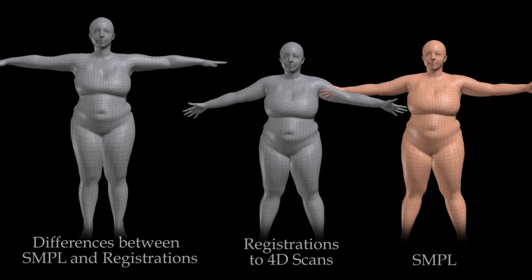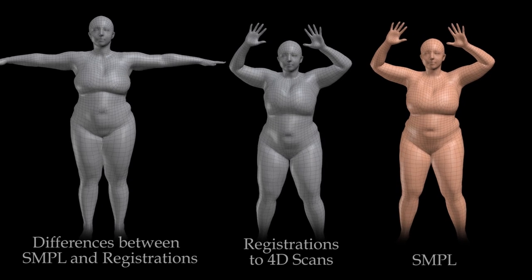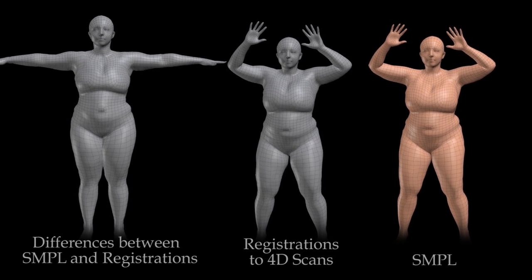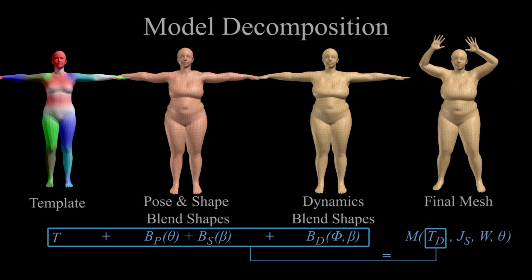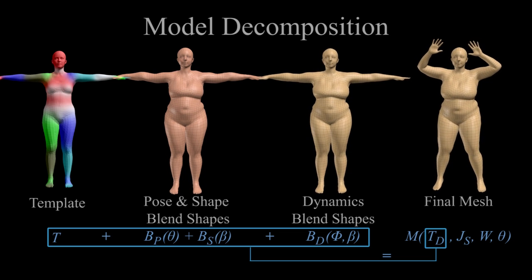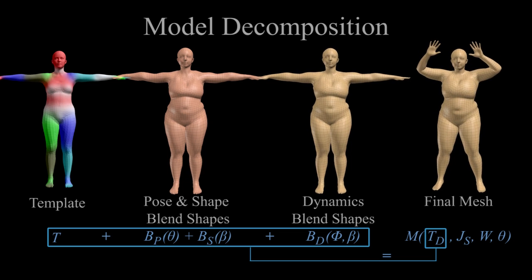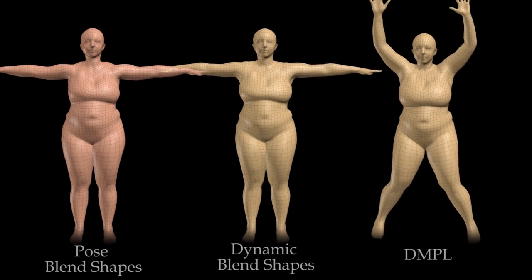While realistic, SMPL does not model soft tissue dynamics. The center mesh shows our template registered to 4D scans. The differences between SMPL and the dynamic registration data correspond to soft tissue dynamics. We extend the SMPL model to add dynamic blend shapes B_D to the base model. The dynamic blend shapes are learned from a training set of 40,000 dynamic scans, and like the other blend shapes, are simply offsets to the vertices of the base mesh. The linear coefficients that modulate the dynamic blend shapes are a function of the history of poses, capital Phi, and the body shape parameters Beta. We call the resulting dynamic multi-person linear model, DMPL.